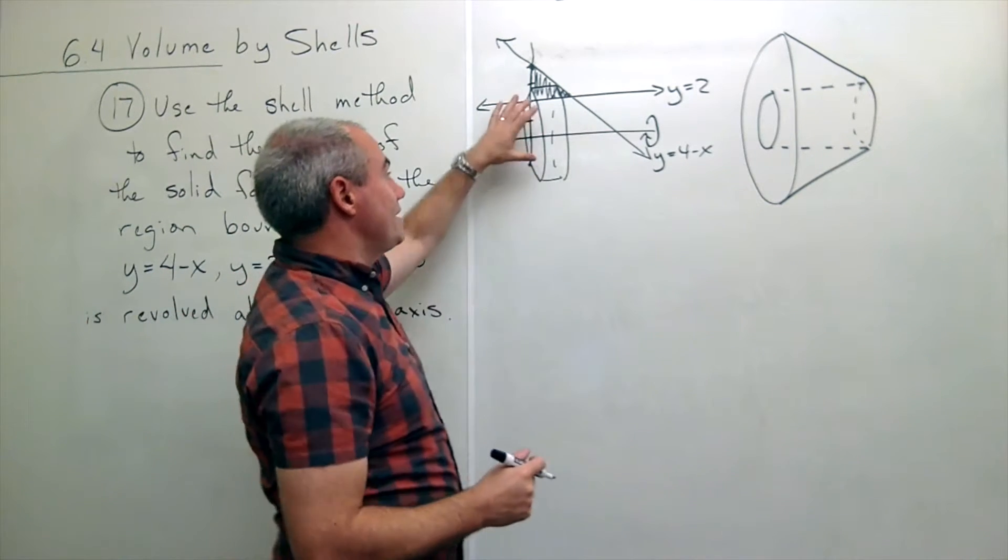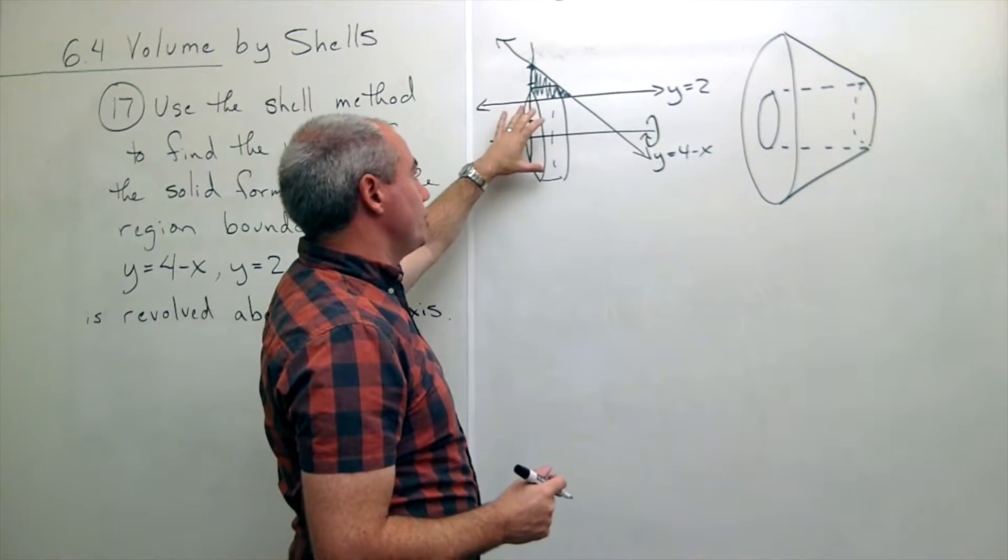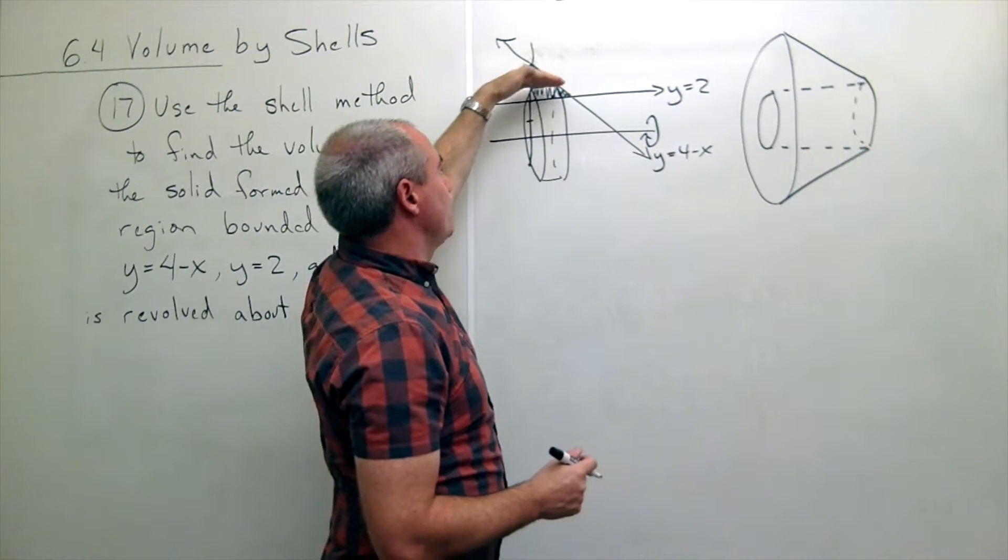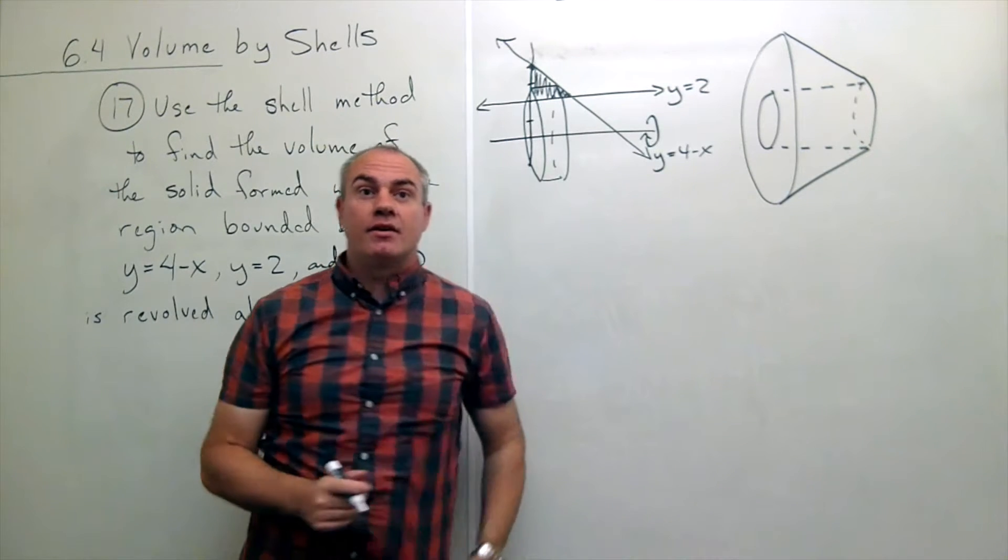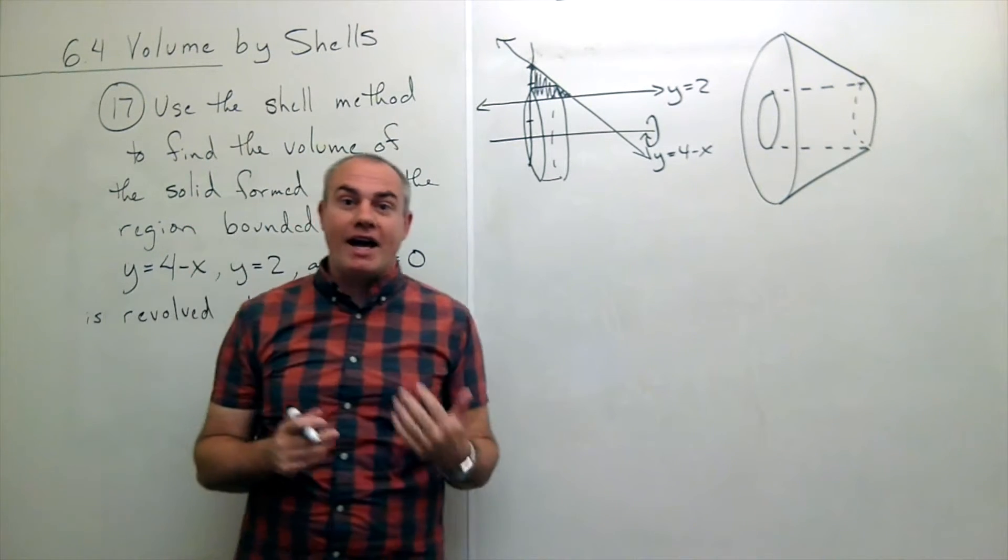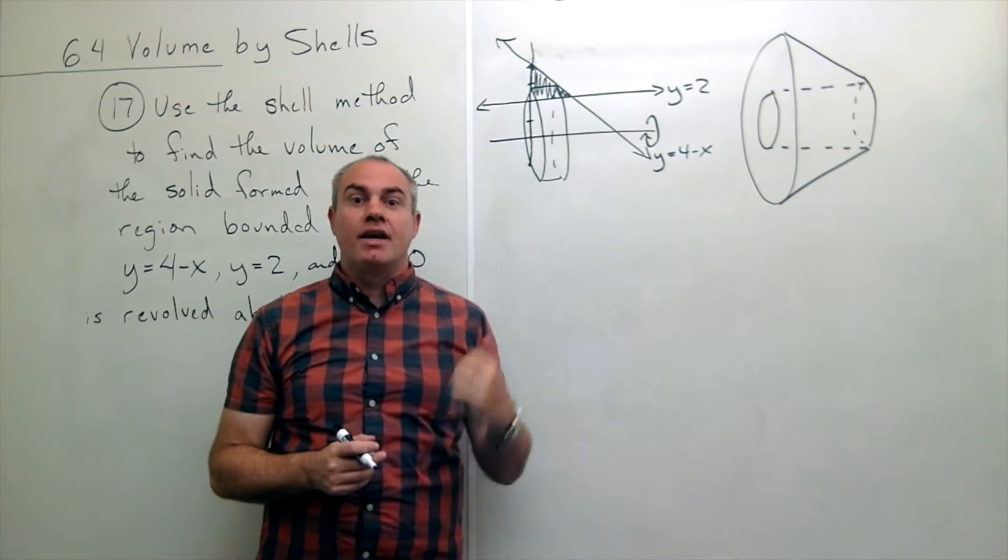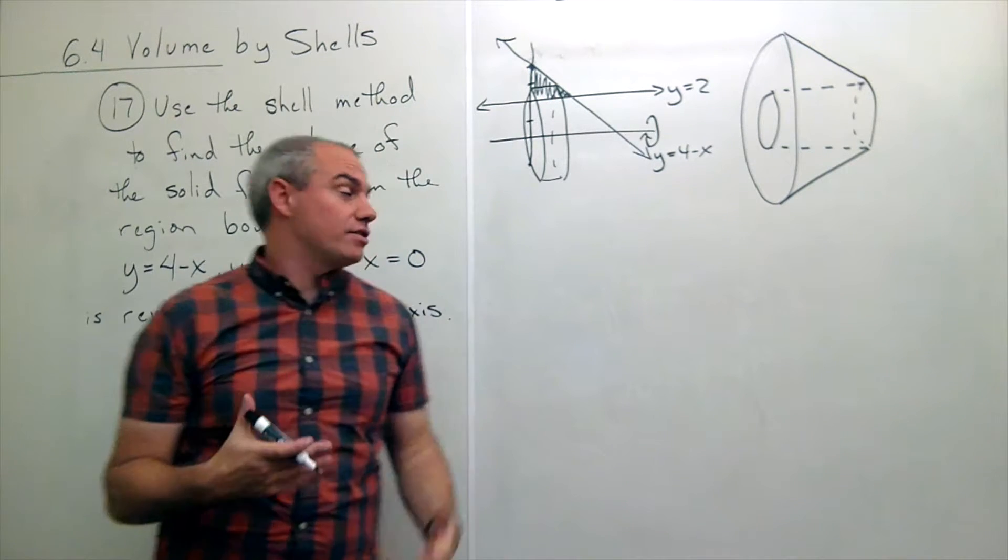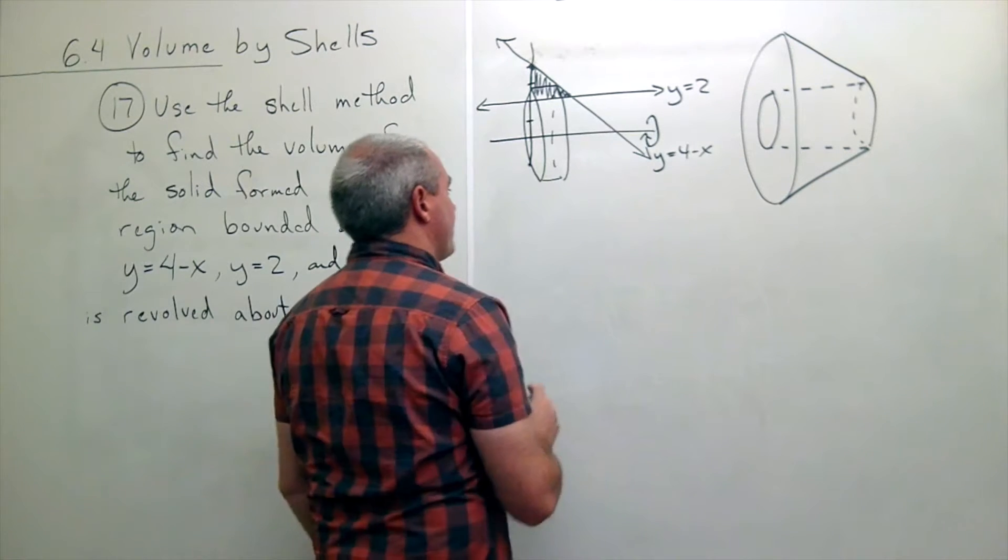Alright, so once I see that I get a shell, I know I'm using the shell method, and when I make these horizontal cuts, am I cutting up the x-axis or the y-axis? In this case, it's the y-axis, so I need to integrate with respect to y.